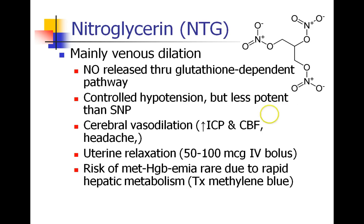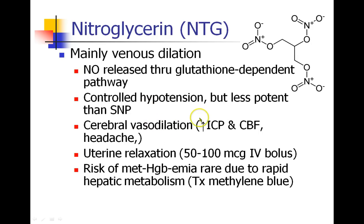The nitric oxide is released when nitroglycerin is metabolized and broken down. We can use it for controlled hypotension during an anesthetic. It's not as potent as sodium nitroprusside, but it's still very effective. It does cause cerebral vasodilation, which could be bad if it increases ICP or cerebral blood flow. It can cause headache. It's also used for uterine relaxation in surprisingly large doses — doses you wouldn't normally give to a patient under anesthesia, but in a laboring patient.